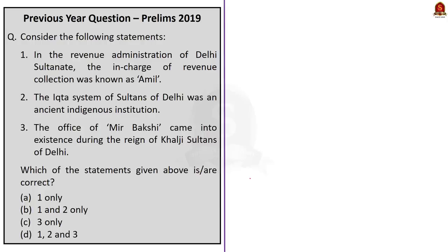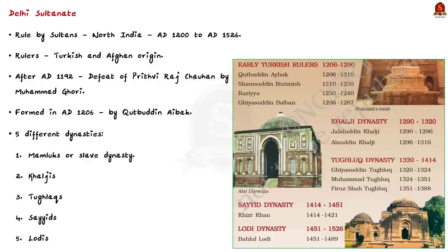This question appeared in 2019 and it deals with the administration of Delhi Sultanate. Delhi became the center of administration with the foundation of the Delhi Sultanate in the beginning of the 13th century. Delhi Sultanate is nothing but the period of rule by Sultans, which existed in substantial parts of North India between AD 1200 to AD 1526.